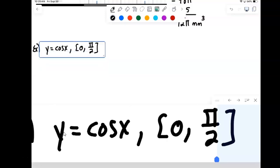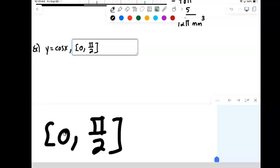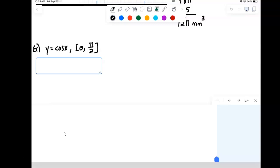So here we have y equals cosine x on the interval from 0 to pi over 2. Okay, so that's the function we want to find the surface area of, its solid of revolution.